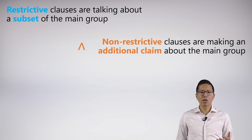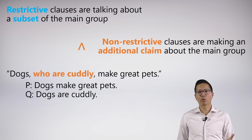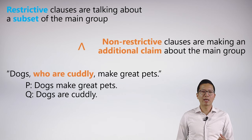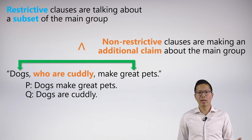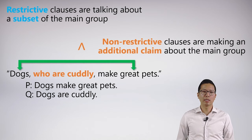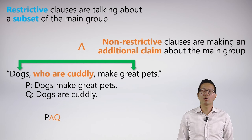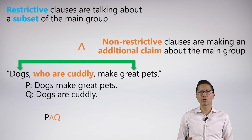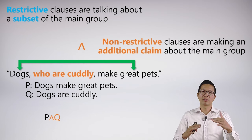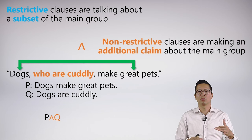And if I make an additional claim, I will use a conjunction to help me symbolize. So if I say 'dogs who are cuddly make great pets,' really I'm saying two things: one is 'dogs make great pets,' and the other is 'dogs are cuddly.' And so that just symbolizes very straightforwardly as P and Q. Remember, non-restrictive clause symbolization — use a conjunction and just read off the separate assertions that we're making.